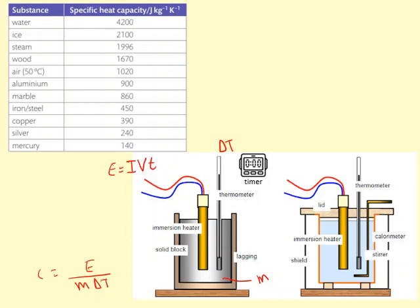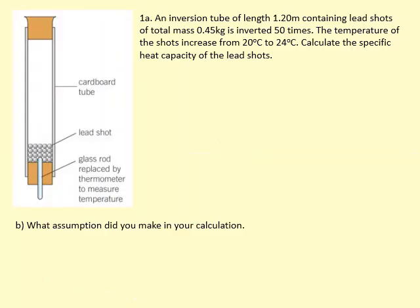It means that water is hard to heat up but also more difficult to cool down as well. This setup can also be used to determine the specific heat capacity. It's called an inversion tube, and you have these lead shots over here with a thermometer at the bottom to check the initial and final temperature. What you do is you invert it, you turn it upside down.